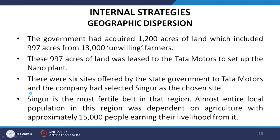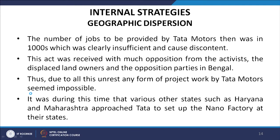Almost the entire local population was dependent on agriculture, with approximately 15,000 people earning their livelihood from it. The number of jobs to be provided by Tata Motors was in the thousands, which was clearly insufficient and caused discontent. There was much opposition from activists, displaced landowners, and opposition parties. Project work by Tata Motors seemed impossible, and other states like Haryana and Maharashtra approached Tata to relocate.